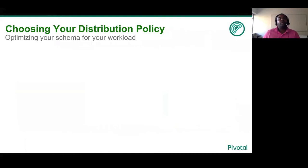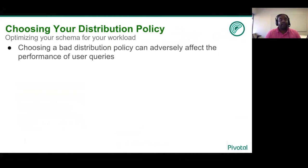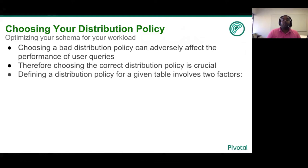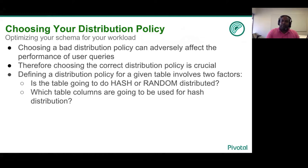Choosing your distribution policy. Choosing a bad distribution policy can adversely affect performance of the user query. Choosing the right one is crucial for GPDB to be your best big data solution. Defining the distribution policy for a given table involves two factors. First, you want to determine if you want to use a hash or a random distribution. If you have picked hash distribution for your table, you need to determine which columns in that table you want to use as your distribution policy for hashing.